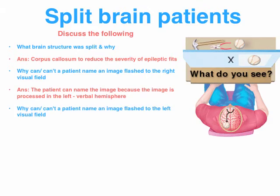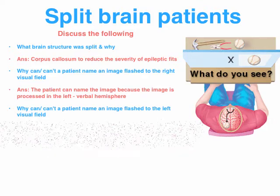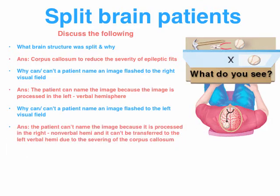When we get the reciprocal question on the left visual field, again two things are required. First, you'll say that the patient can't name the image. Then justify by linking it to the structure involved — because it's processed in the right nonverbal hemisphere, and it can't be transferred to the left verbal hemisphere due to the severing of the corpus callosum. You'll need to state that if it's not specified in the question that the corpus callosum has been split — if it is specified, that second part is not required.